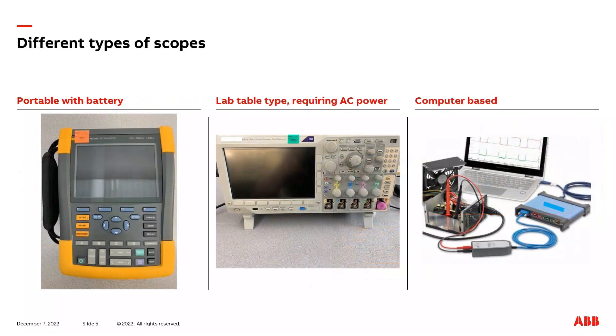So what type of scope is best for you? Let's discuss a couple different types in the marketplace. The first one on the left is a portable one with a battery. This is great if you don't have quick and easy access to an AC power source. The downside is the batteries over time tend to degrade and need replacement. Or you could be on a job site a little bit longer than expected trying to troubleshoot a problem and all of a sudden the battery is about to die and you're scrambling to find an AC power source to plug the scope into.